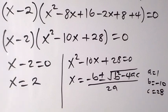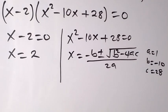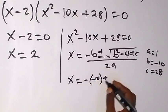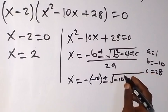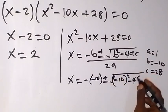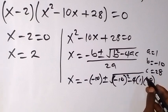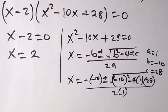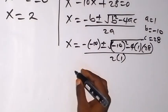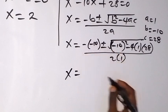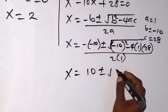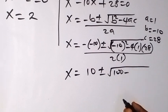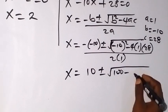Substituting into the quadratic formula: x equals minus (minus 10), plus or minus square root of (minus 10) squared minus 4 times 1 times 28, all over 2 times 1. This gives x equals 10 plus or minus square root of 100 minus 112, all over 2, which is square root of minus 12.